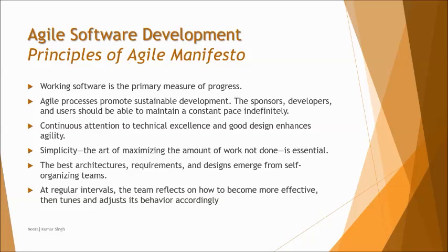Principle seven: agile processes promote sustainable development — sponsors, developers, and users should maintain a constant pace indefinitely, delivering consistently rather than delivering initially and then taking long gaps. Principle eight: continuous attention to technical excellence and good design enhances agility, meaning we keep upgrading and improving ourselves to make the product better. Principle nine: simplicity — the art of maximizing the amount of work not done — means keeping requirements as simple as possible, broken into simpler forms that are easy to handle within short sprints.